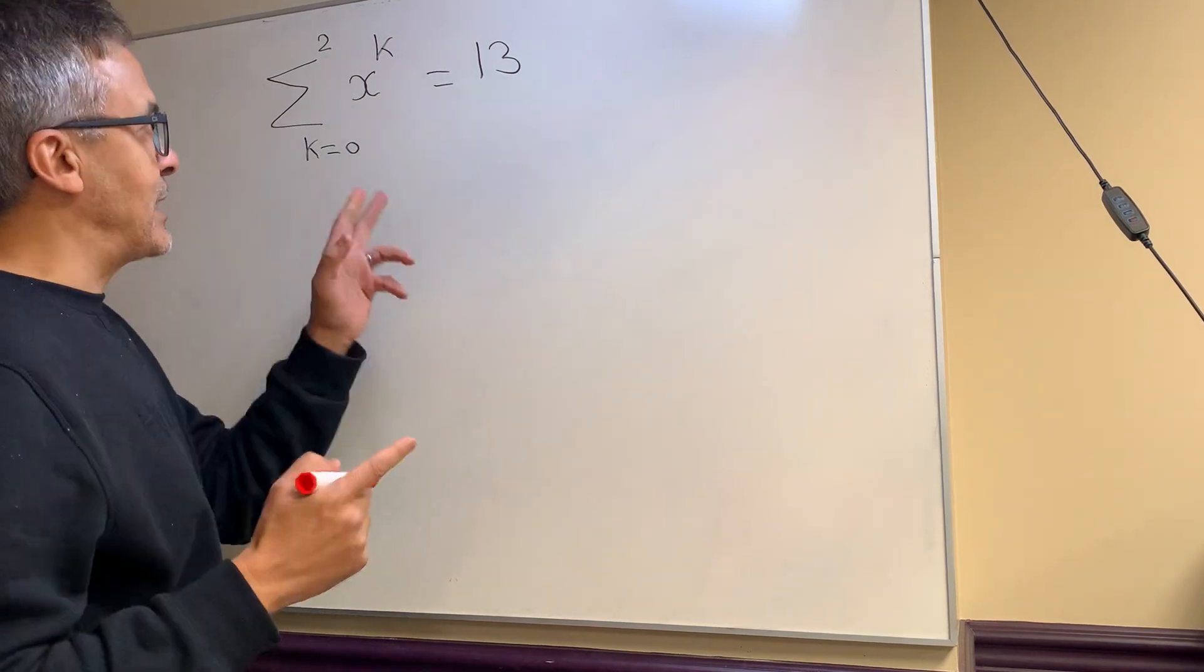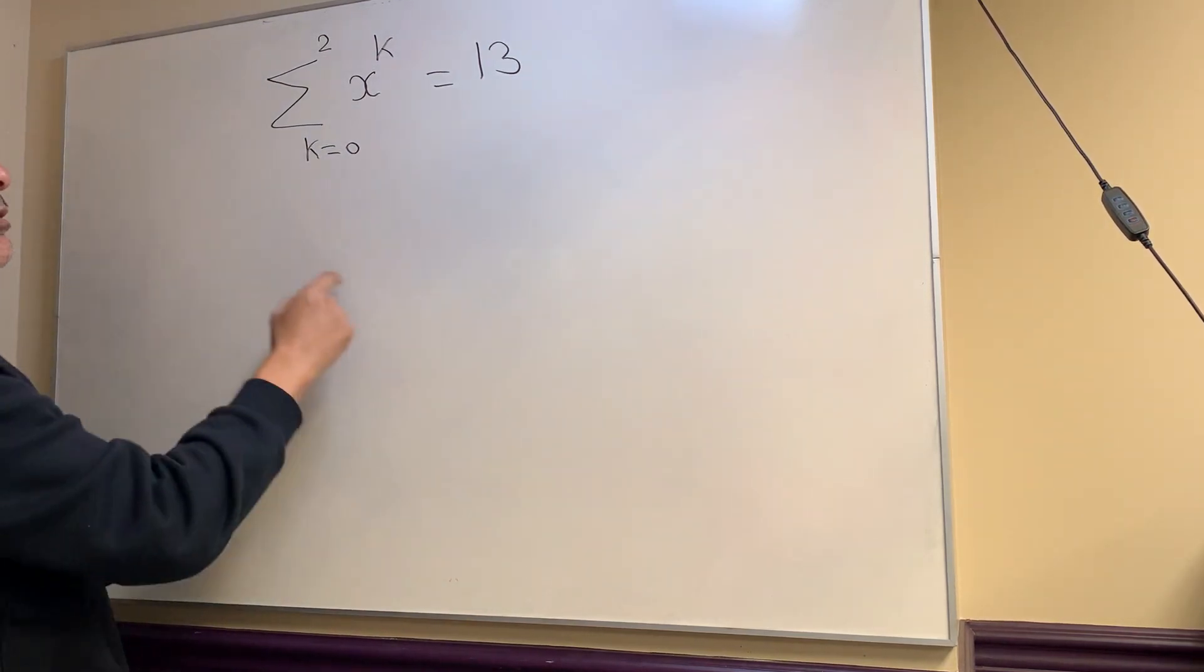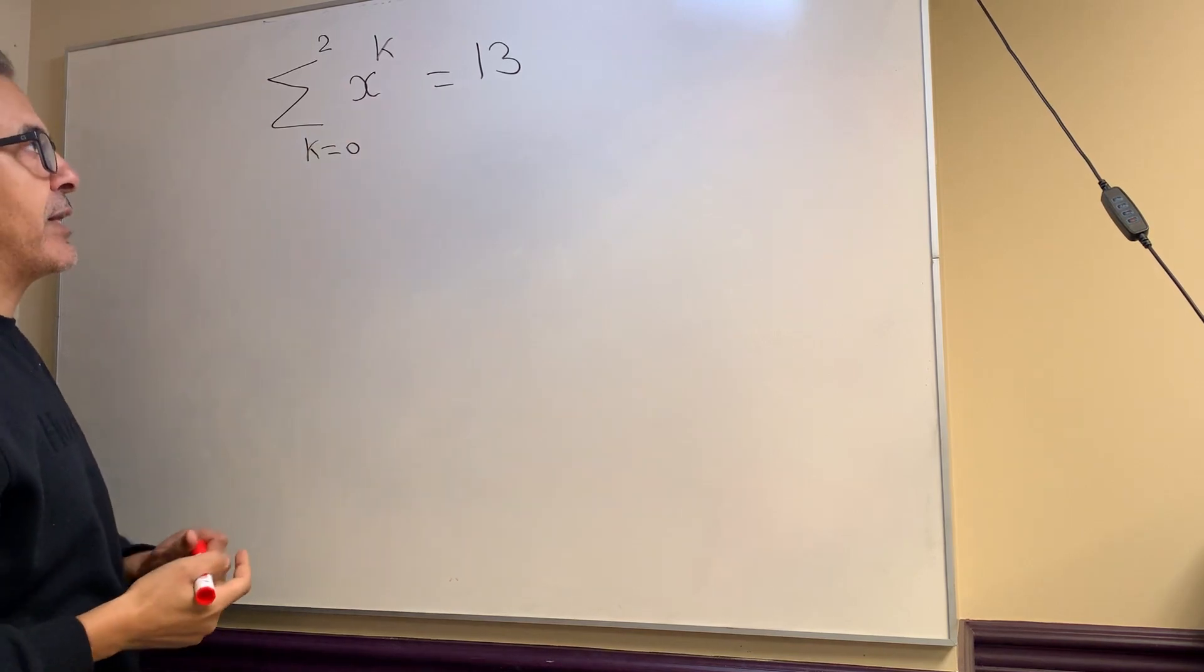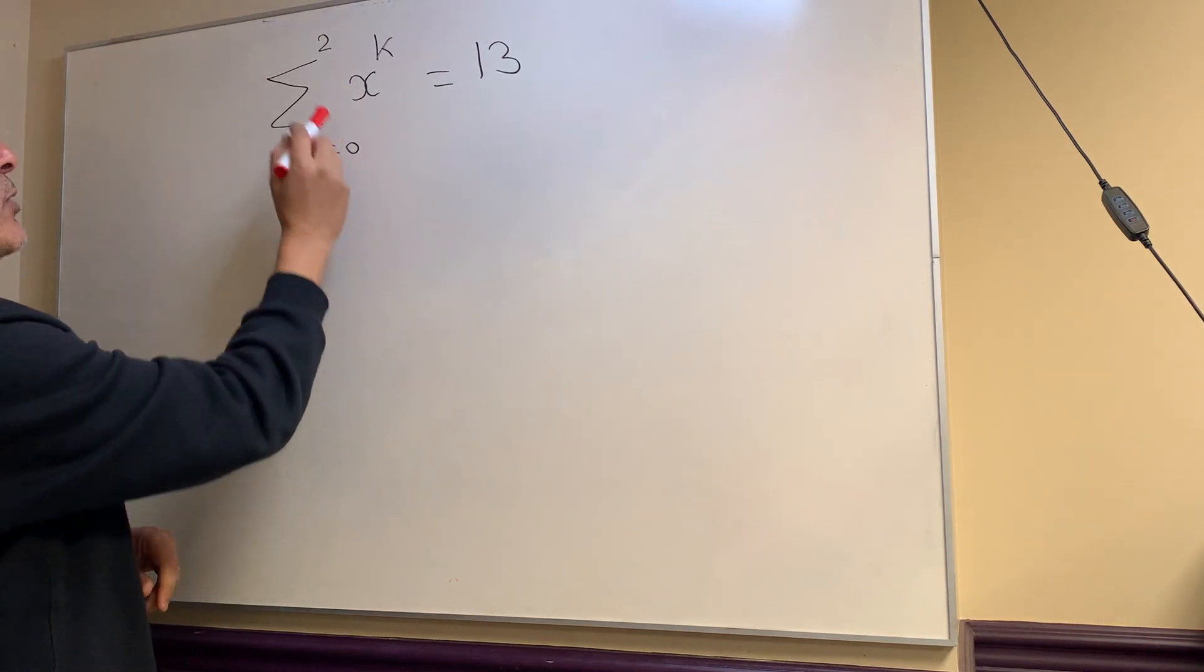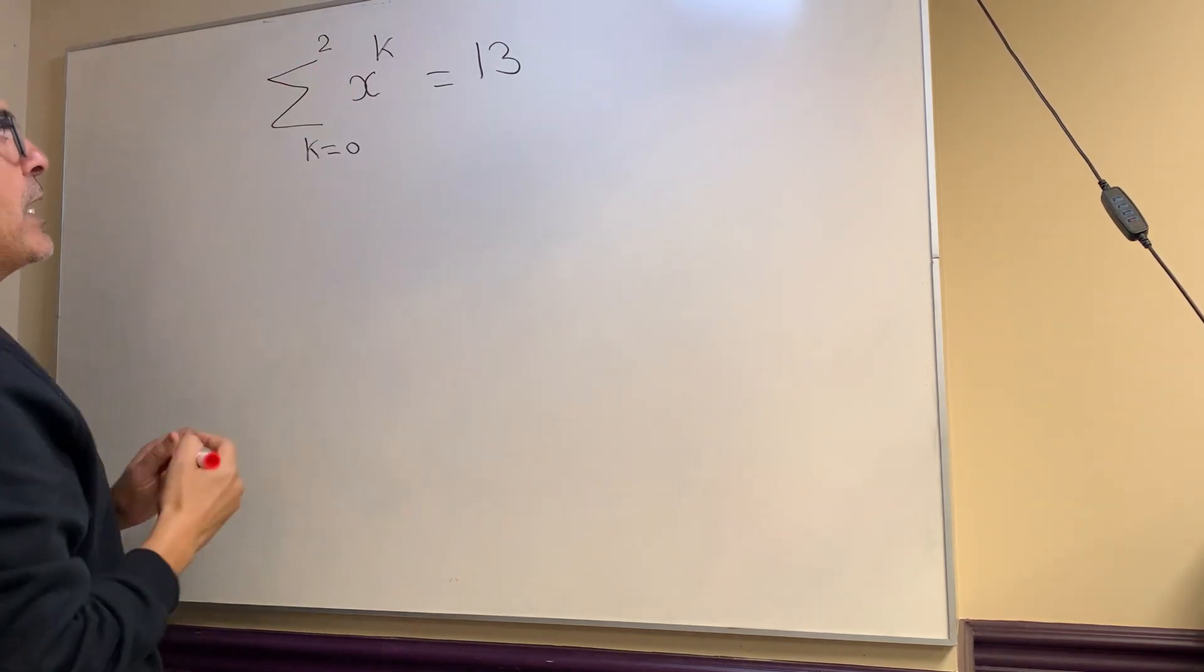Hi, this is Sammy again. Here's a question that involves sigma notation and factoring quadratics. For this question, they say k is from 0 to 2 and it's x to the k.